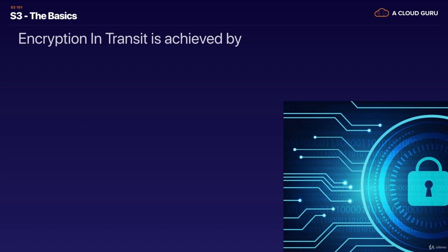There's encryption in transit. Whenever you go and visit a website, if you're going to HTTPS, it means that the traffic is going to be encrypted in transit. So basically, between your computer and the server, that traffic is encrypted. No one who's eavesdropping on that will be able to break it and understand what you're looking at. That's why we use HTTPS. Encryption in transit is always achieved by SSL or TLS. So whenever you're browsing using HTTPS, that is encryption in transit.